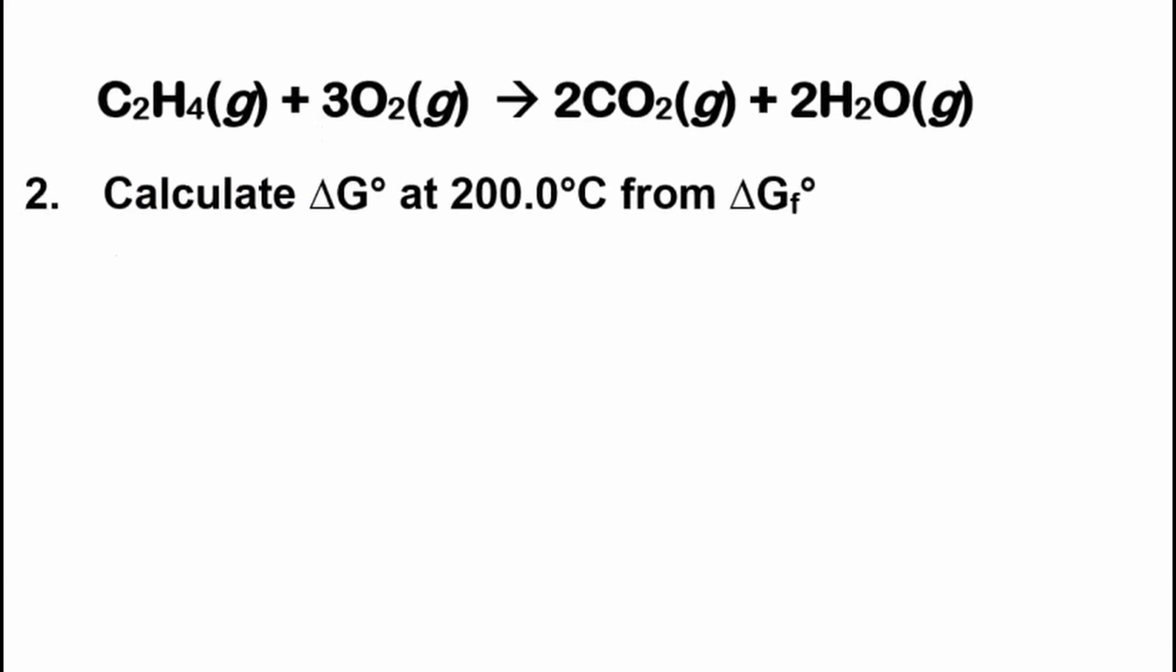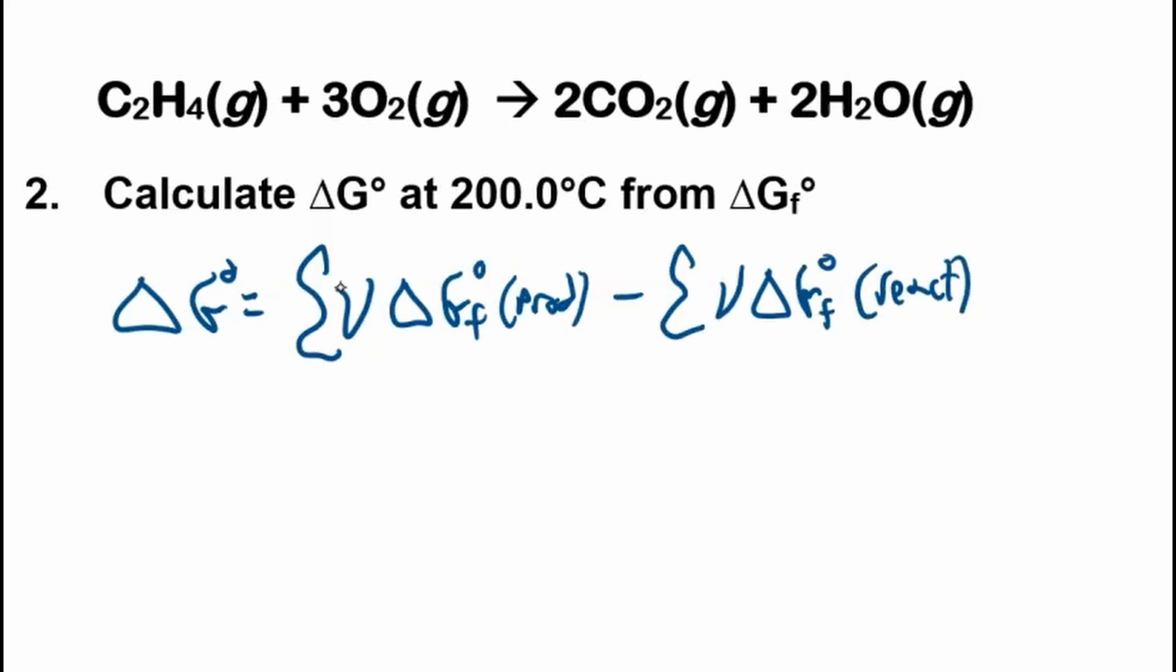Now let's calculate the reaction Gibbs energy the other way, and this is shorter, thankfully, from thermodynamic data of Gibbs energy of formation. To do that, we're going to use this equation that we've seen with the reaction enthalpy and entropy before. So the sum of the Gibbs energies of formation of the products minus the sum of the Gibbs energy of formation of the reactants. Products minus reactants. So CO₂, we'll start with that. Sum up the products, start with the 2 there.